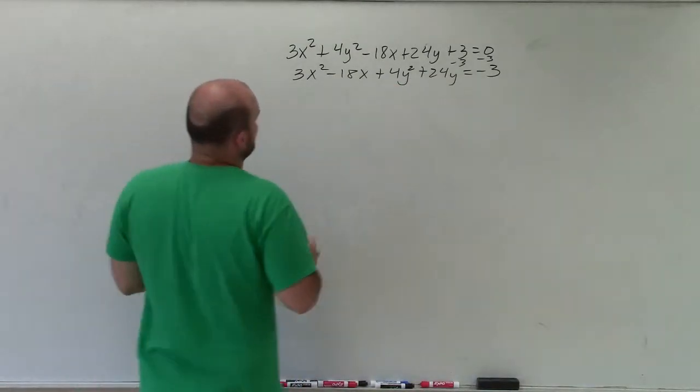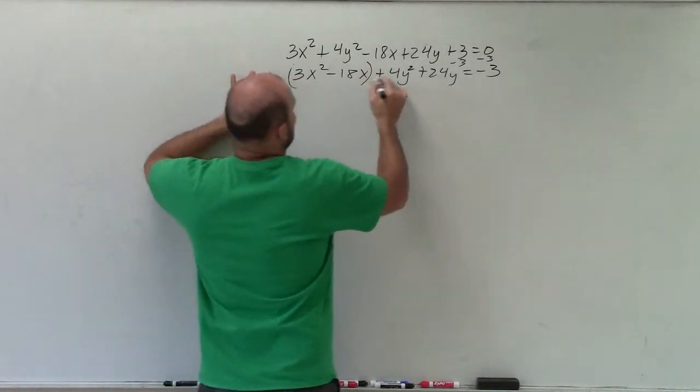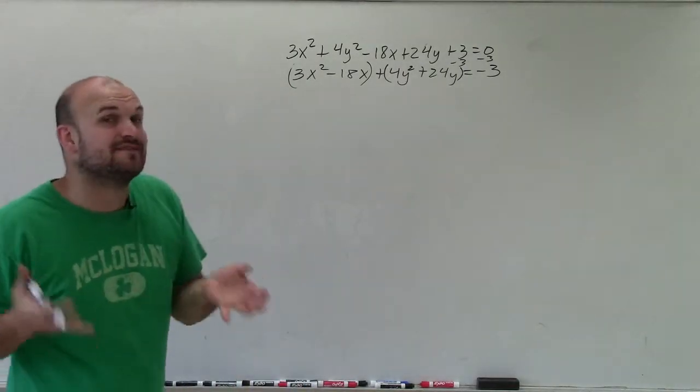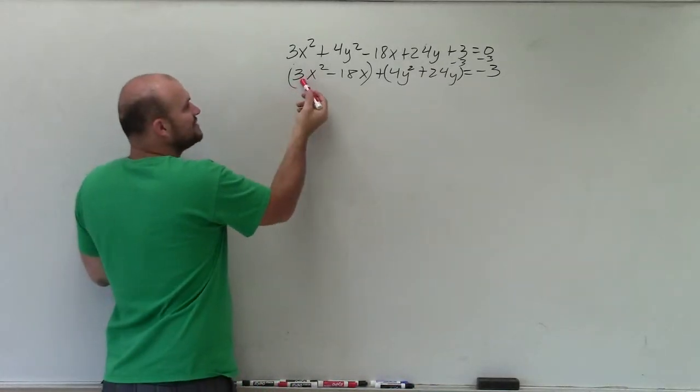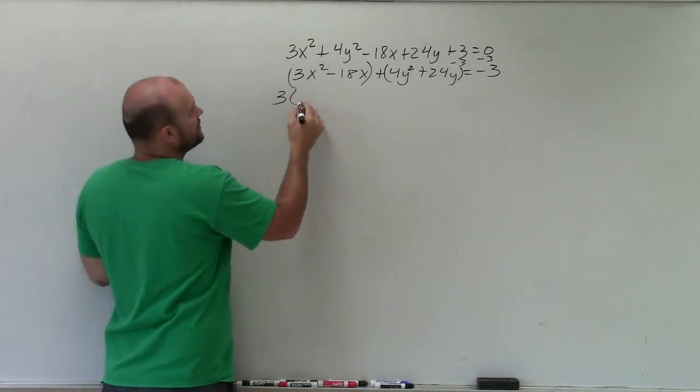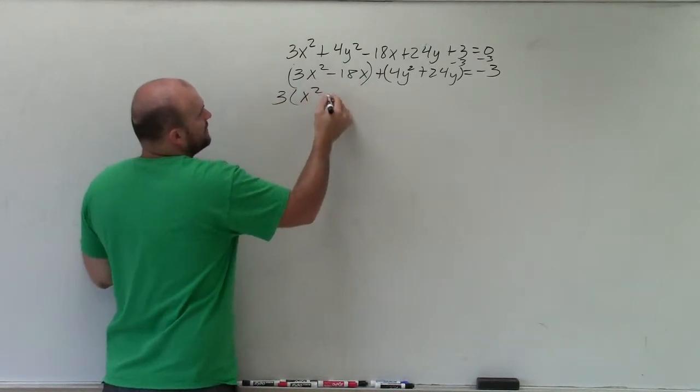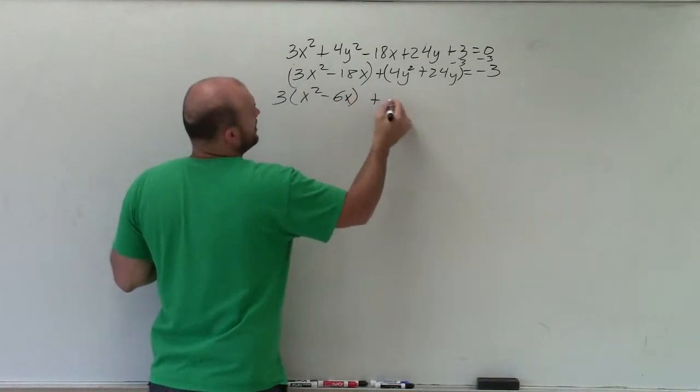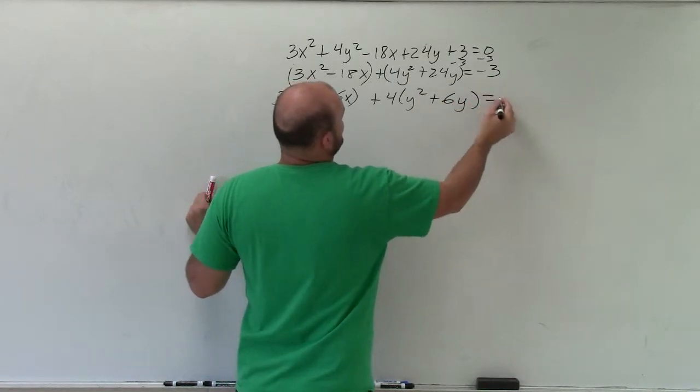Now, again, what we're trying to do is we want to create perfect square trinomials. Right now, if you just kind of look at these, we just have two binomials. I want to create two perfect square trinomials. So to do that, I have to complete the square. But to complete the square, we've got to make sure that our quadratic terms have a coefficient of 1. So I'm going to factor out their common factor, which in this case for the x's would be 3. So therefore, I'm left with x squared minus 6x, plus here the common factor would be 4. So y squared plus 6y equals negative 3.